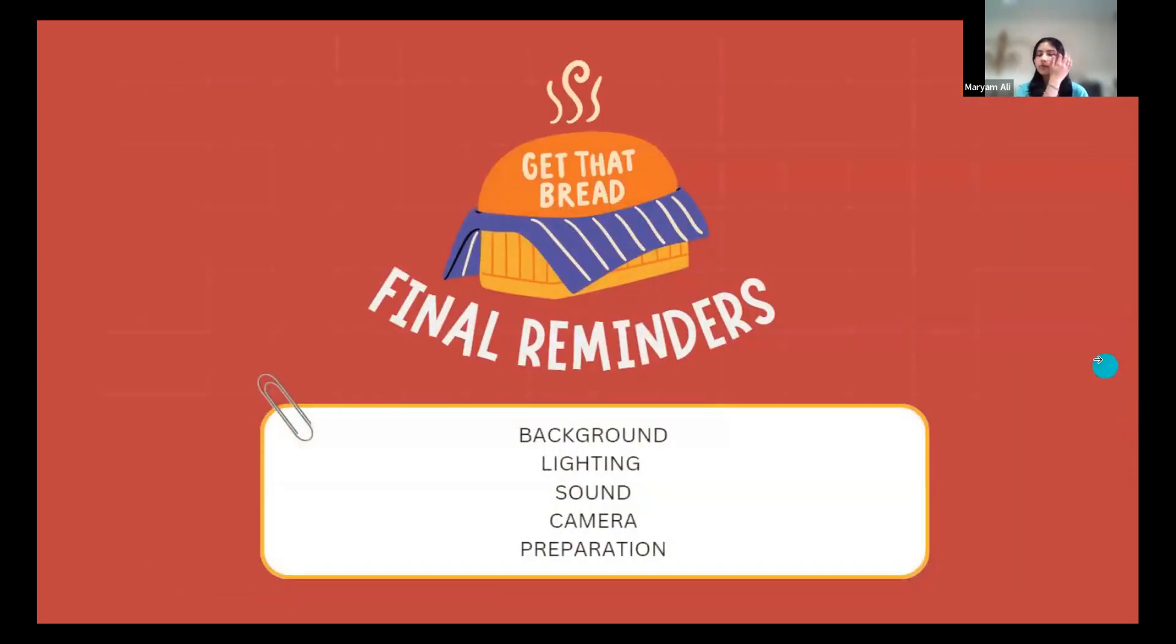Finally, a summary of what we've gone over. So make sure that your background is plain and not too busy, so not to distract from you. Make sure that your lighting is well-lit and bright with a front-facing light. And number three, sound: make sure that you can be heard. Number four, camera: find an alignment which works for you. Number five, make sure that you're prepared. Thank you.